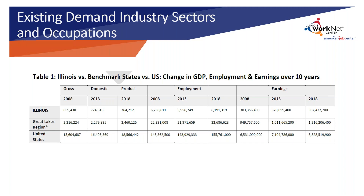The governor's executive order report states that by focusing resources on specific clusters, the state can more effectively focus on a competitive advantage in emerging industries. Leading companies in high-growth industry clusters act as a magnet for talent, related businesses, robust infrastructure, and innovation. Investing in the foundations of a dynamic economy — such as a well-trained workforce, a favorable regulatory environment, and a coordinated plan — can help the state attract companies to specific clusters.